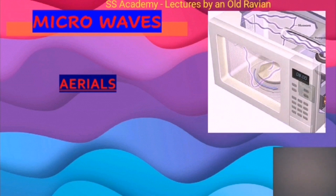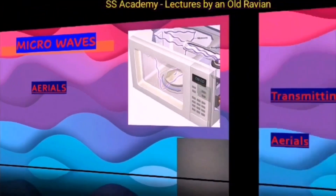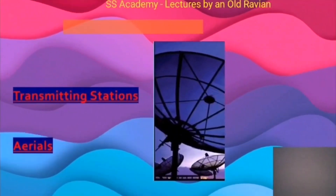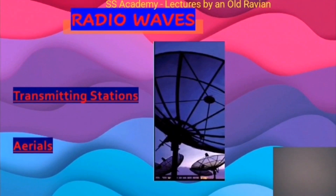And lastly, radio waves. Radio waves are produced by transmitting stations and by aerials. They are detected by radio sets and mobile phones, and they are used in radio communication. Thank you for watching.